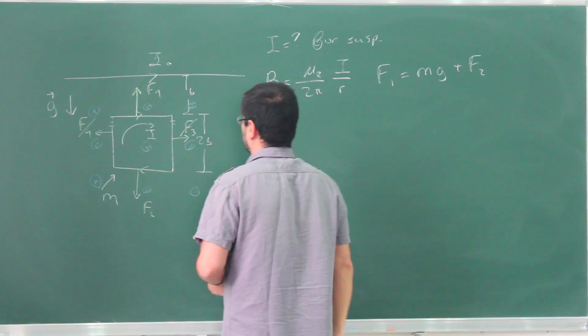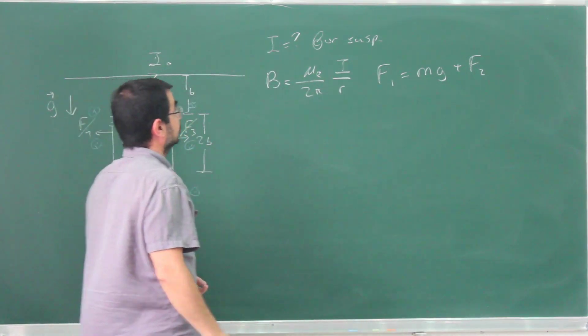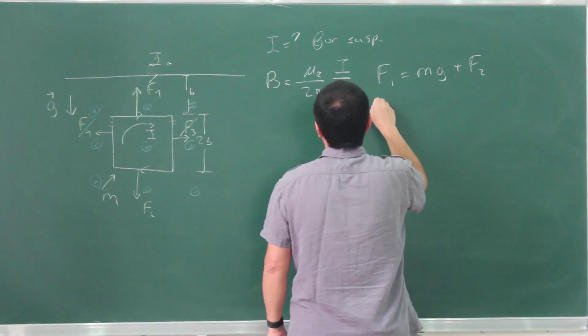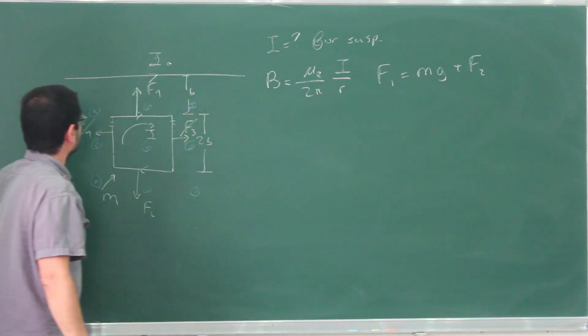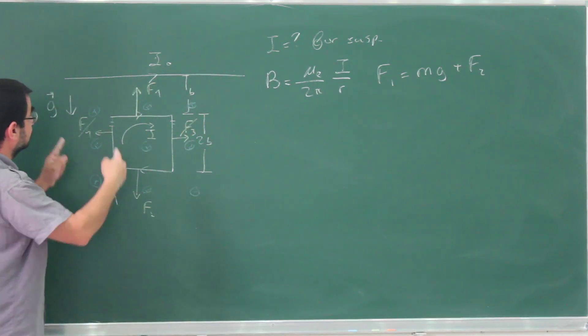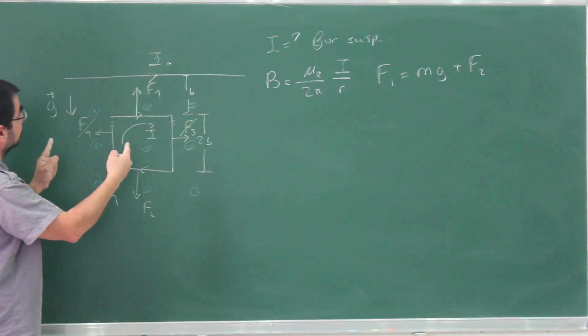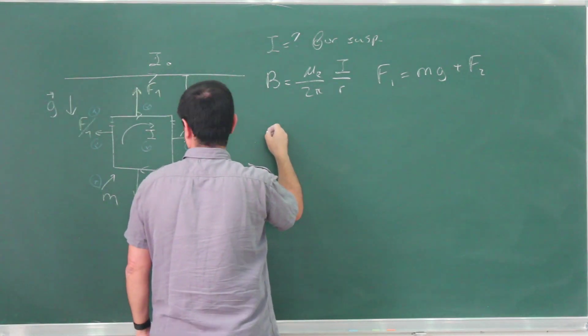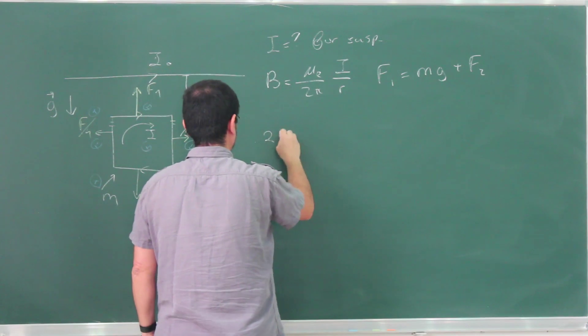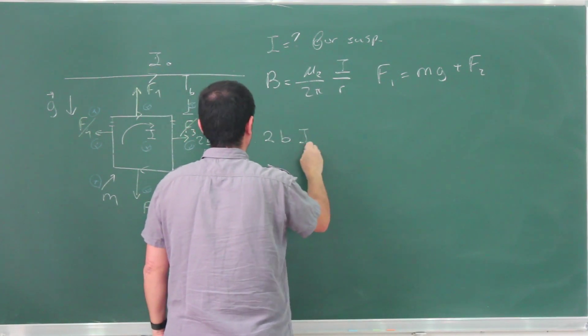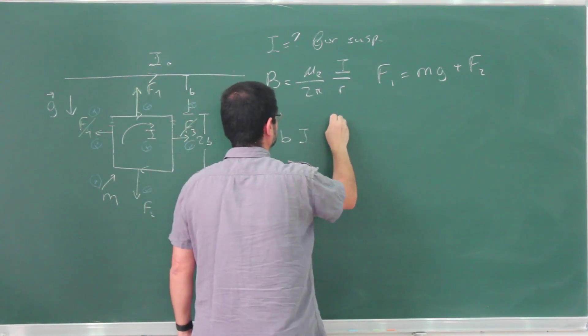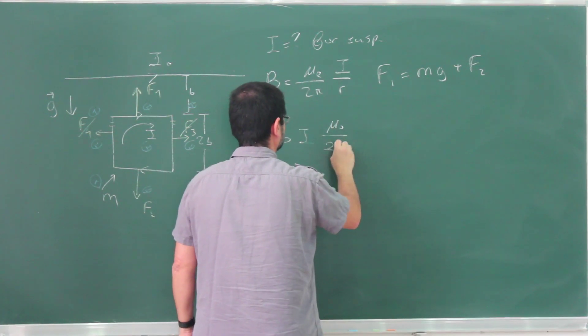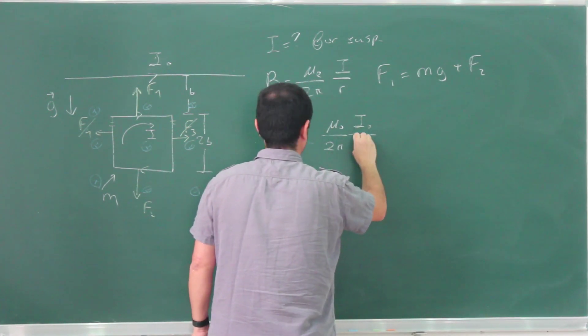So let's write those magnitudes. F₁ is going to be the length times the current times the magnetic field, so the length is 2b, times the current is I, times the magnetic field is μ₀ over 2π, I₀ over b.